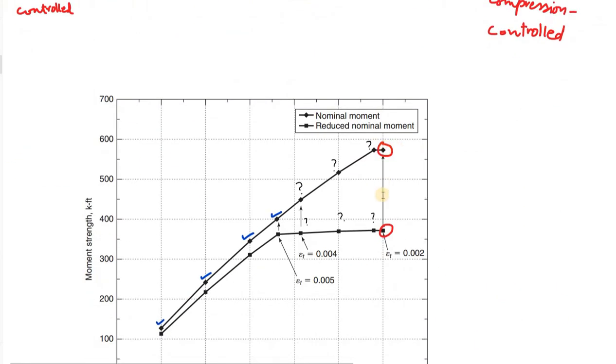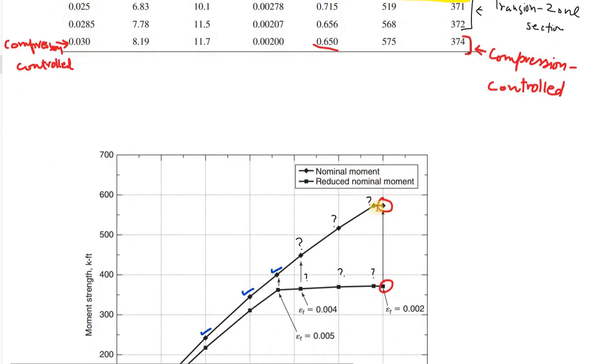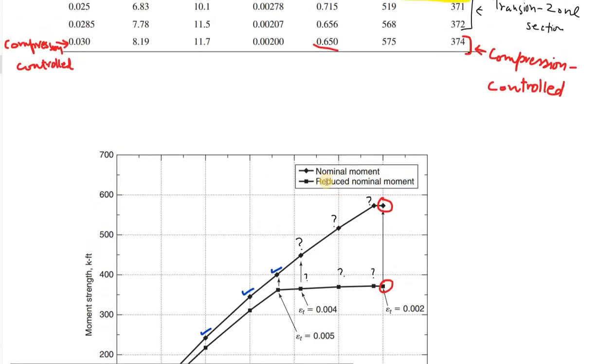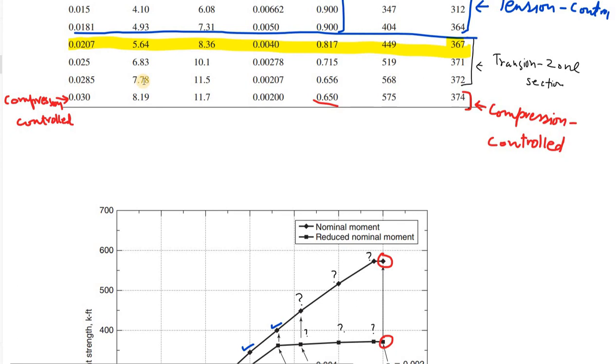One final observation is that if you look at the last point, the last cross-section is an over-reinforced, compression-controlled section. In the last section, the failure happens not by yielding of steel but by crushing of concrete, by reaching of concrete to the maximum usable compression strain of 0.003. Failure is happening in the compression zone before anything can happen in the tensile zone. This is the reason that even if you add more steel, compare the second last cross-section and the last cross-section.